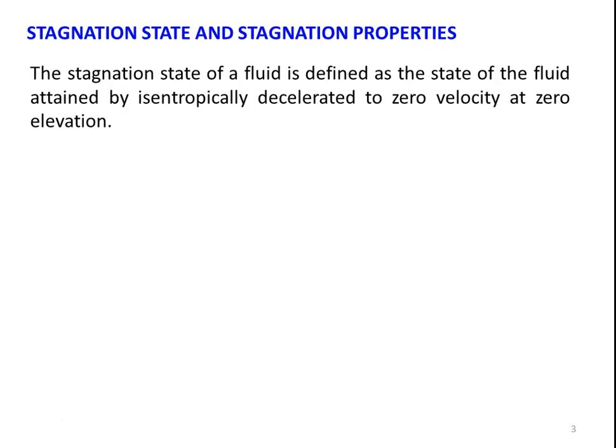First, let us define what is stagnation state, then we take the stagnation properties. The stagnation state of the fluid is defined as the state of the fluid attained by isentropically decelerating to zero velocity at zero elevation. When the fluid is flowing through a pipeline, we assume that the flow is decelerated to zero velocity at a particular location. The point or state at which the velocity is zero and elevation is zero is called the isentropic state, and all the properties at that state are called stagnation properties.